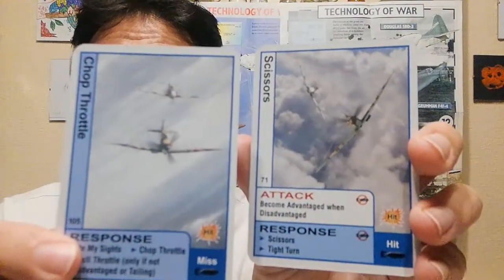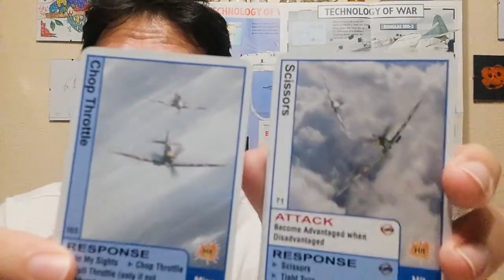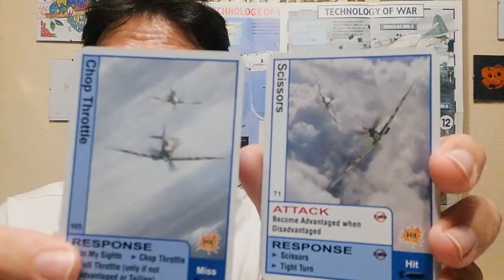Now, the awesome thing about these is the allied deck shows allied aircraft advantaged over axis. The axis deck conversely shows their aircraft advantaged over allied. So it's easy to get very distracted by the sheer beauty of these cards. But I'd recommend paying attention because dogfights can be rather fast and furious and you need to know what's going on.